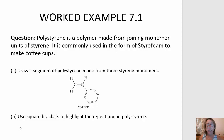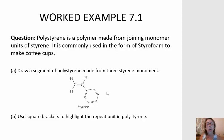You will not be expected to actually draw any part of a polymer, but you will be expected to identify the repeat unit of a polymer formed from addition polymerization. Remember, addition polymerization forms from the reaction of an alkene — a molecule with a double bond — to form long molecules that only have carbon-carbon single bonds in the backbone.